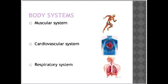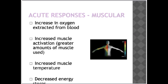The respiratory system is the biological system that introduces respiratory gases within the body and performs gas exchange. In humans and other mammals, the anatomical features of the respiratory system include airways, lungs, and the respiratory muscles. In the next six slides we're going to look at acute and chronic responses for each body system.